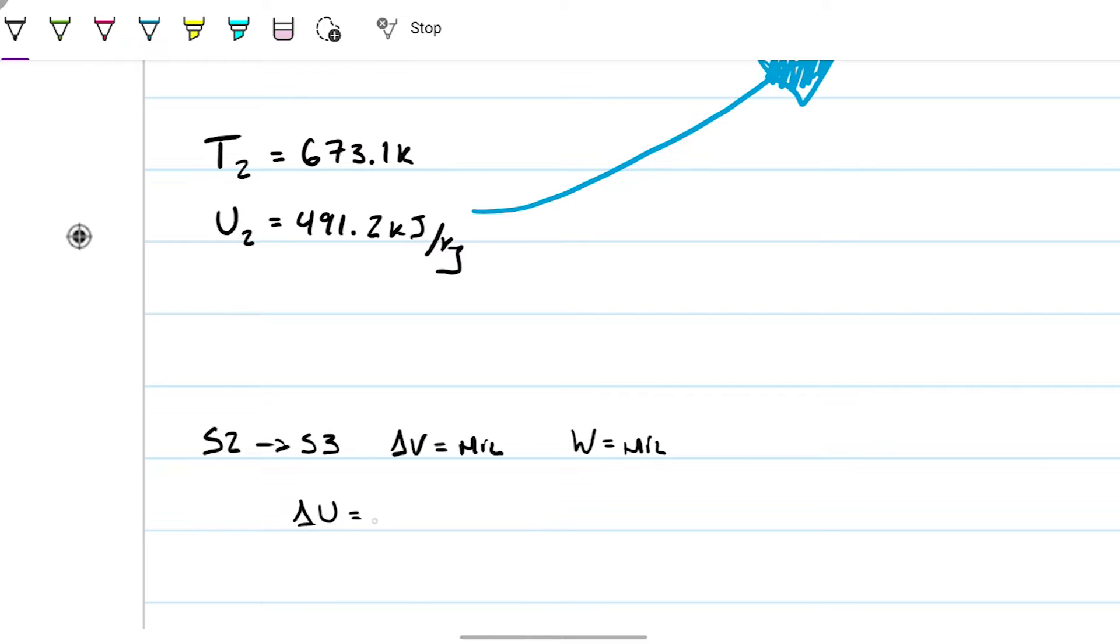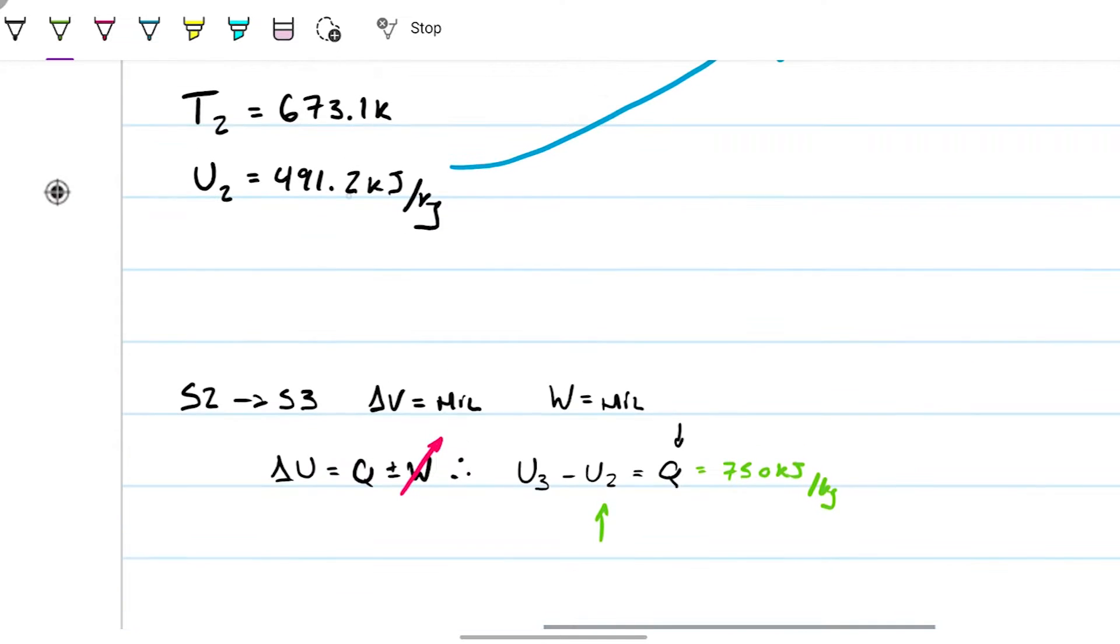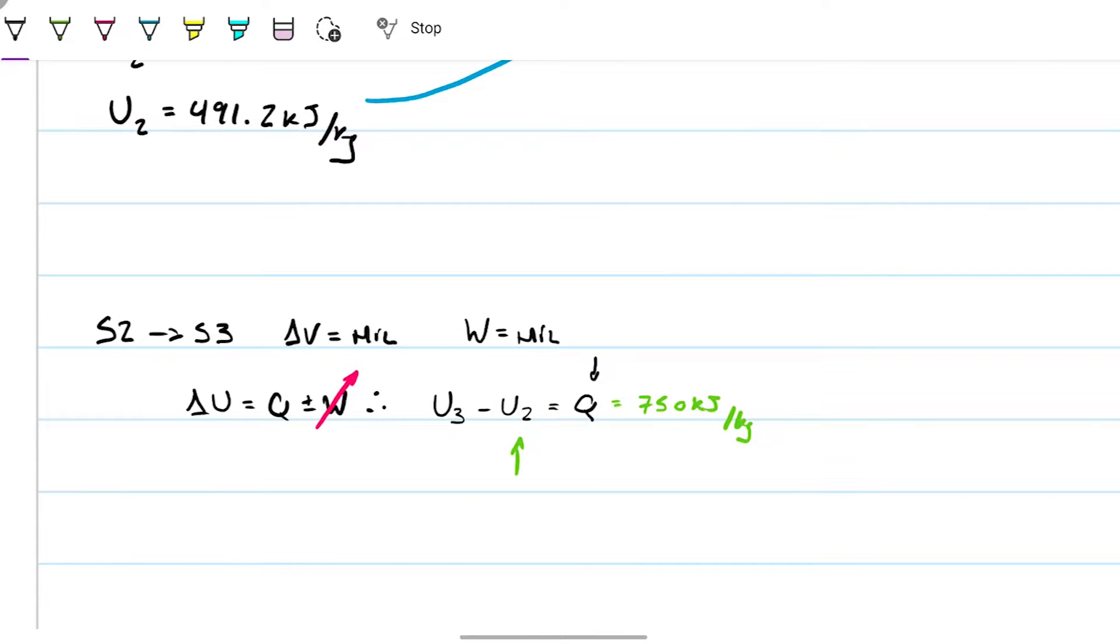Therefore, delta U equals Q minus work. There's no work that happens from 2 to 3, so that means delta U, U₃ minus U₂ equals Q. In this case, we know Q, we were given Q, that's 750 kilojoules per kilogram. We know U₂ because we just calculated it from interpolation, so the only unknown there is U₃.